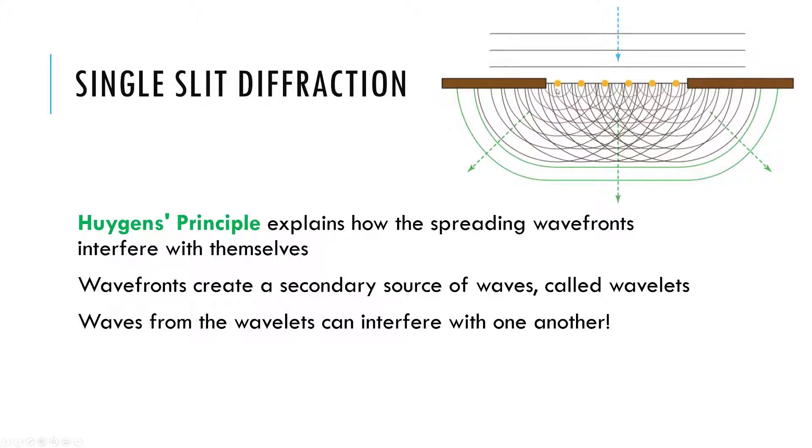And it also explains this interference. The idea is that the individual little waves from these wavelets can interfere with one another, as we'll look at for the math of single slit.